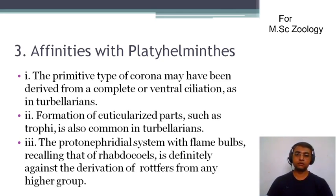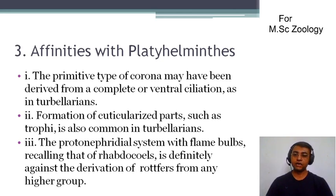In the head region, rotifera have a ciliary corona. Second, the formation of cuticularized parts such as the trophi is also common in turbellarians. Third, the protonephridial system with flame bulbs, recalling that of Rhabdocela, is definitely against the derivation of rotifers from any higher group.